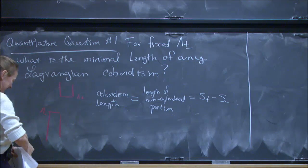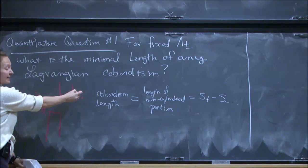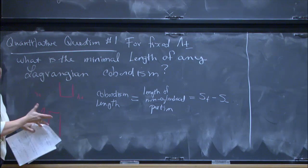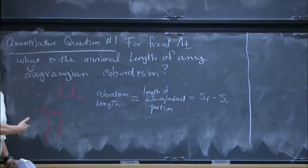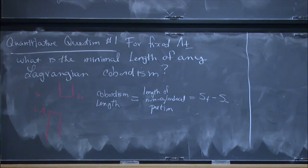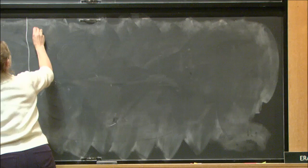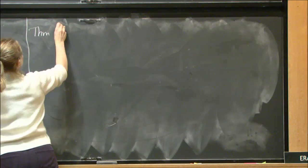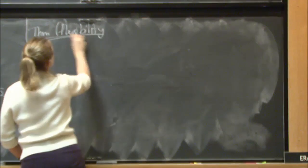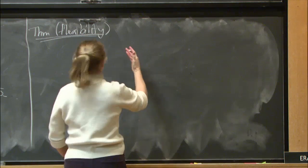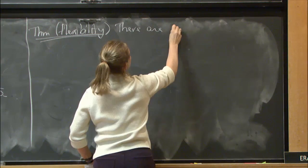We're fixing the Legendrian submanifolds and looking at all possible Lagrangian cobordisms, trying to squish them together as much as possible. If you looked at this just from topology, everything would be essentially zero — you get those arbitrarily close all the time. So now adding in these geometric conditions, does it change? Do we get flexibility like you would see in the topology world, or is there some rigidity? We'll see both.